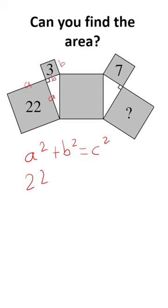Similarly, 3 is b squared. So we can find the area of this shape here because it's just going to be c squared, which is 25.